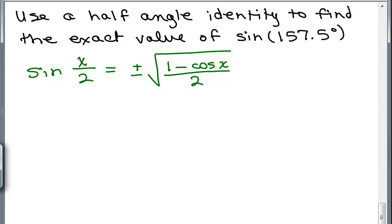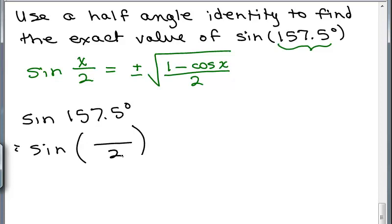What this is saying is that this angle given, we want to write that as half of another angle. We could think of it as sine of something over 2 equals sine of 157.5 degrees. That should be able to be written as sine of something over 2. So how would we figure that out? We'd say, the sine of 157.5 is half of what?